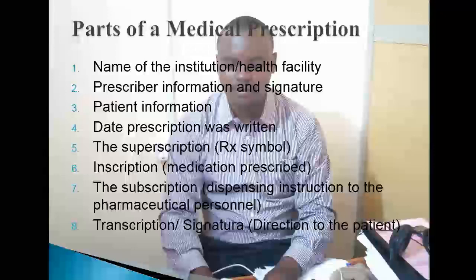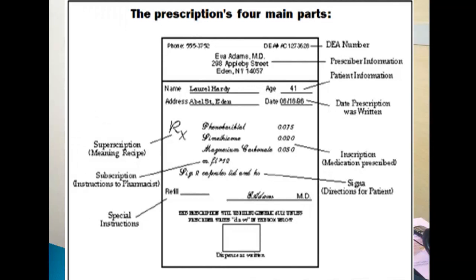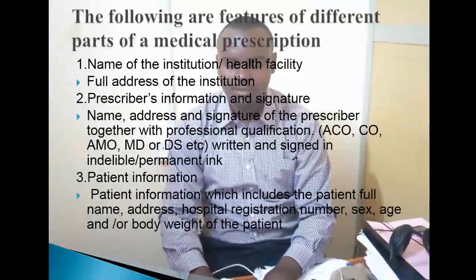Na mwisho kabisa kuna transcription ambayo inakuwa na signature na maelekezo kwa mgonjwa. Kama inavyoonekana hivi ndivyo sehemu zote: kuna prescriber information lazima kuwe na title zake, patient information, inscription, maelekezo, superscription, subscription, na matumizi maalumu — special instructions — maelekezo husika kukia na dawa aliyopewa, kama ni ya kumeza, ya kunywa, au ya kuinstill, pamoja na signature.